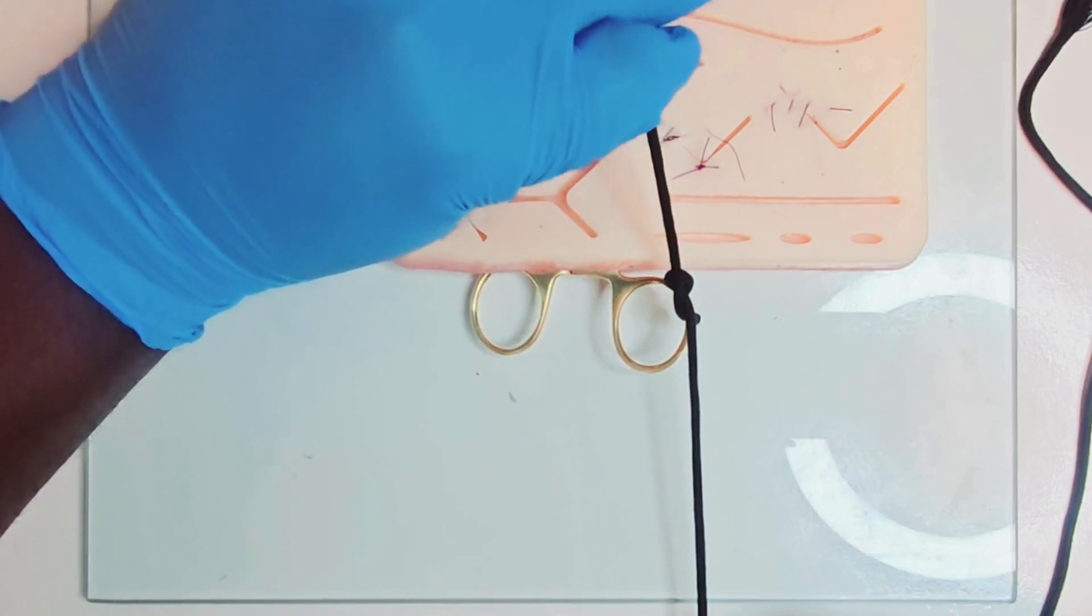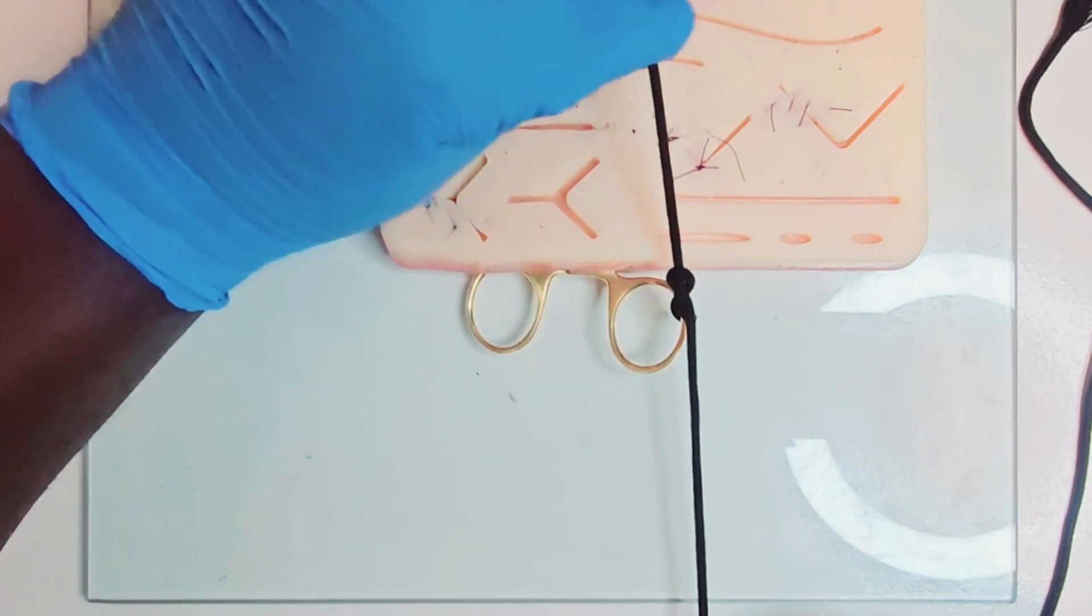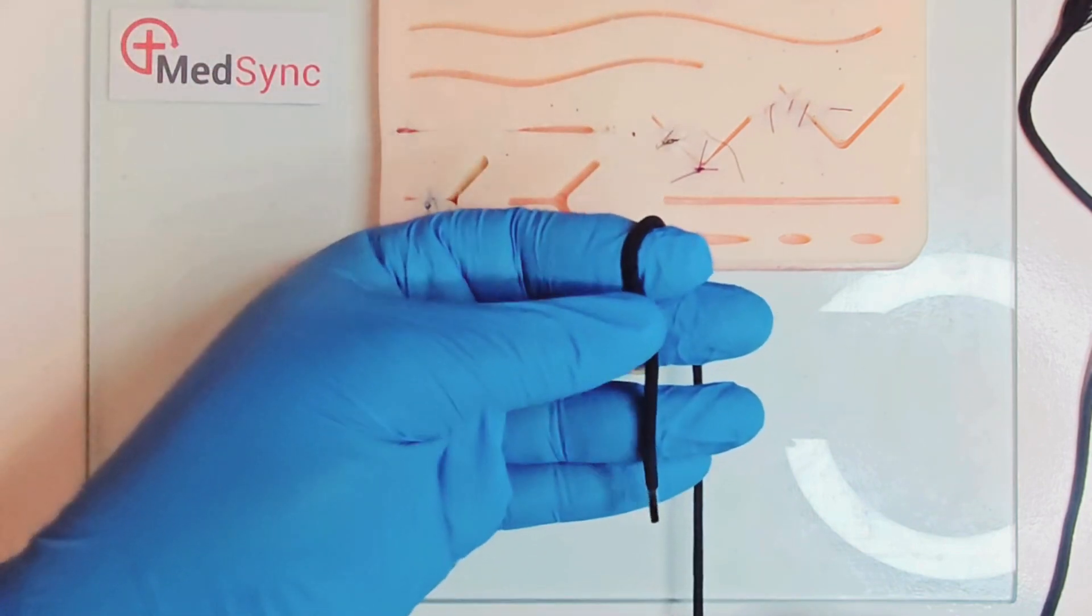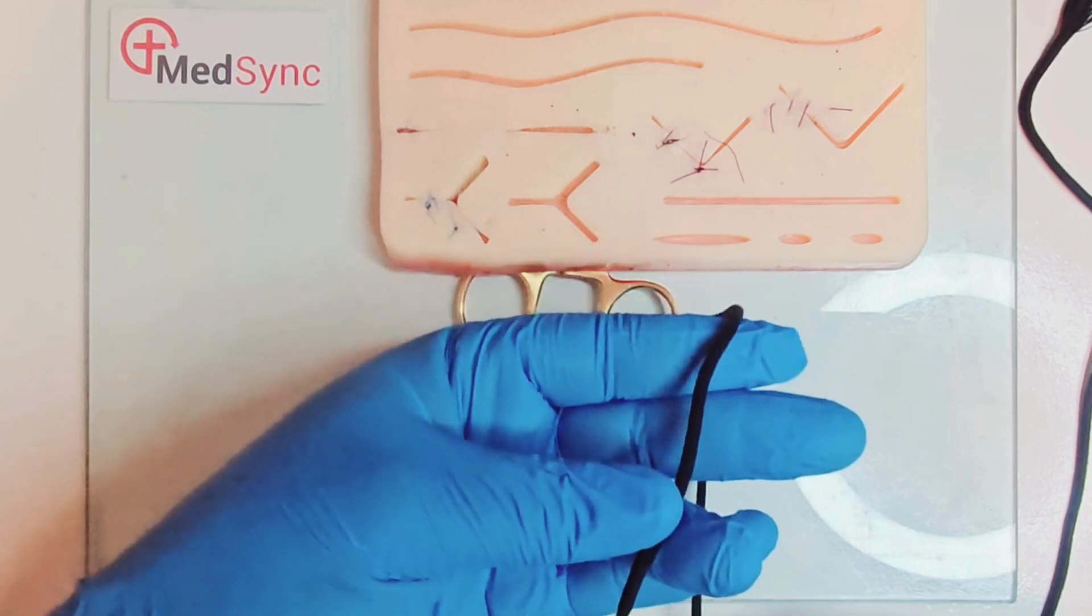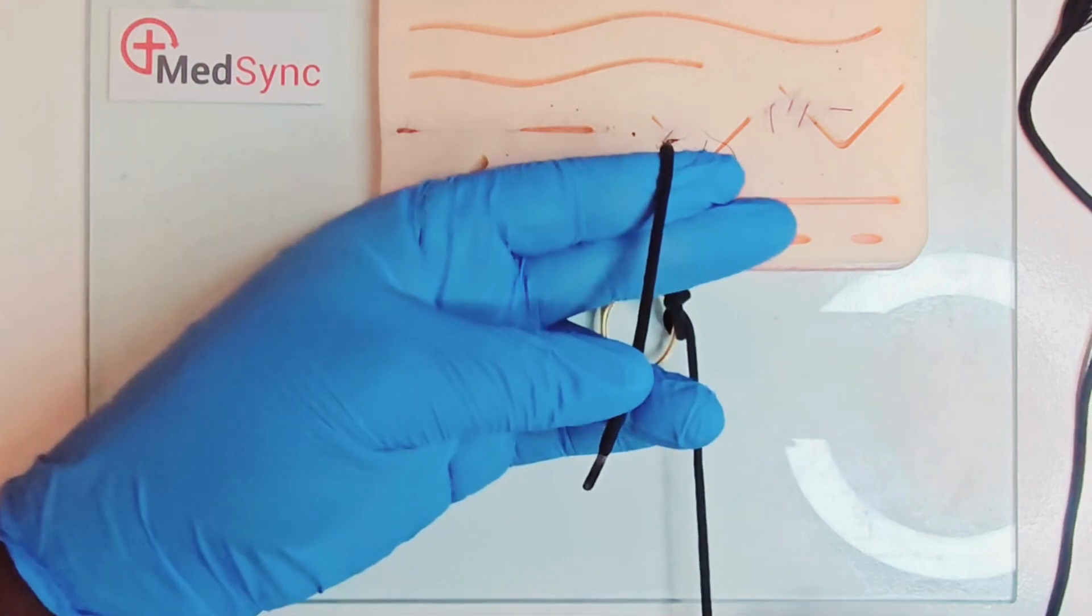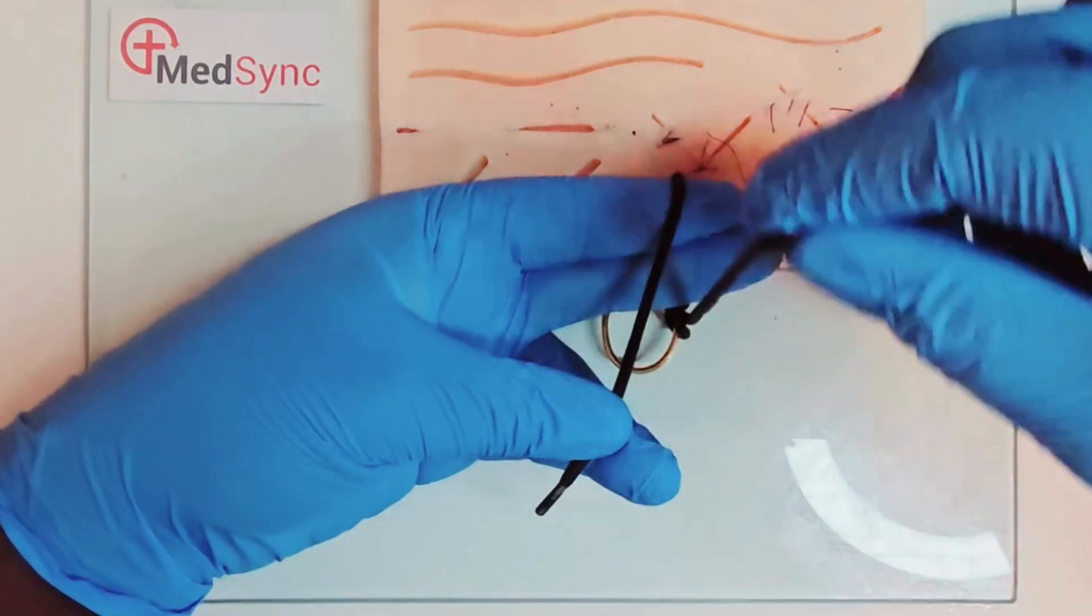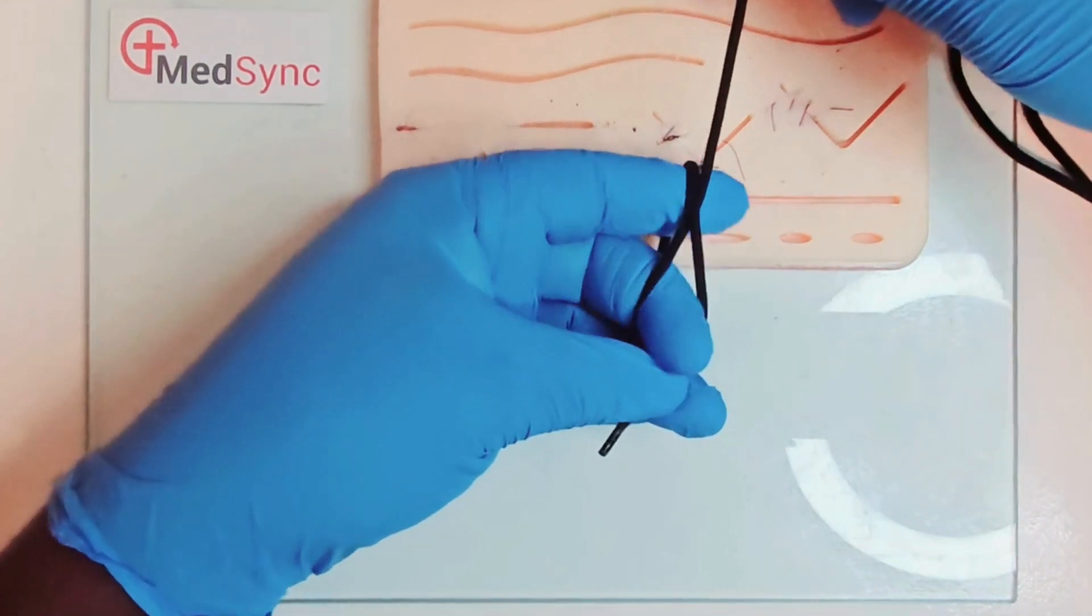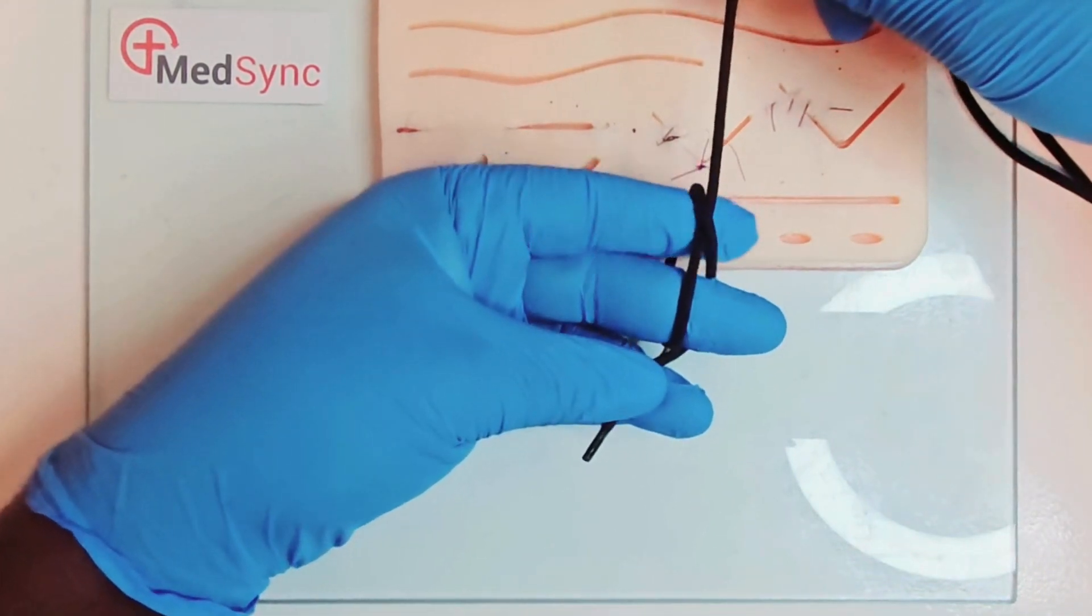Grasp the short end between index and thumb and supinate your hand toward you. Slide your fingers down the thread to grasp it between thumb and ring finger. Run the long suture up the index and middle fingers parallel to the short thread. Flex the middle finger over the long thread and push the short suture under it.